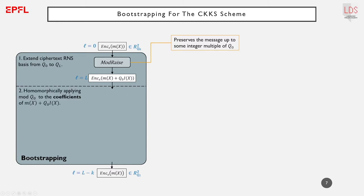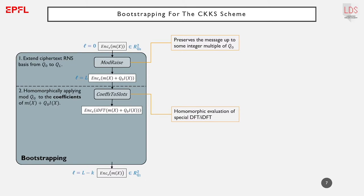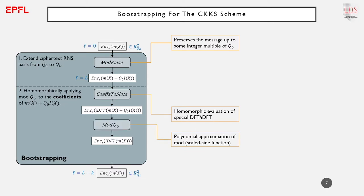The second step consists in homomorphically applying a modular reduction modulo q_0 to the coefficients of the message. To do that, a special discrete Fourier transform is homomorphically evaluated so that further computations are applied on the message coefficient-wise. Then the modular reduction is applied as a polynomial approximation of a sine function scaled by q_0. Finally, the inverse transform is homomorphically applied to put m back to its original domain. The output is at level L minus k, where k is the number of levels used for bootstrapping, so k should be smaller than L for the procedure to be practical.